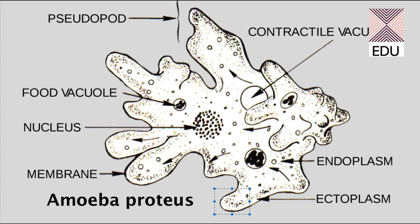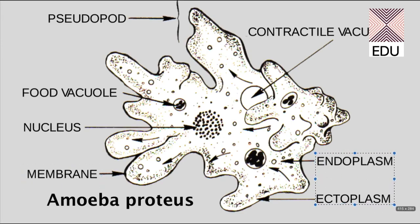Amoeba has an outer membrane called the plasma membrane, which is the limiting membrane of amoeba. Inside this membrane we have the cytoplasm, which is divided into two parts. The outer cytoplasm is called ectoplasm and the inner cytoplasm is the endoplasm. The whitish inner part is the endoplasm, and the outer layer all over the body is the ectoplasm.